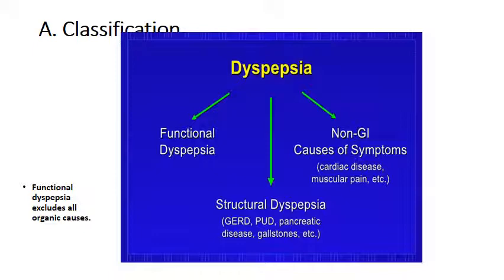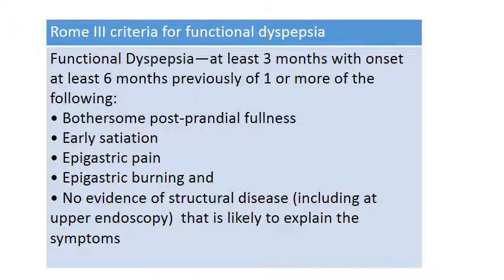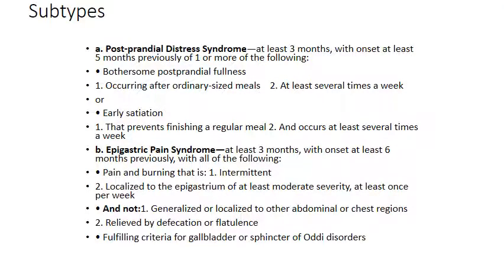We always diagnose functional dyspepsia by exclusion of organic causes. The Rome Foundation put forward criteria based on symptoms for the diagnosis of functional dyspepsia. This criteria depends on the presence of one or more of the following: post-prandial fullness, early satiation, epigastric pain, or epigastric burning with no evidence of structural disease. These symptoms should be present for at least three months, with onset at least six months previously. Functional dyspepsia has two main subtypes: post-prandial distress syndrome and epigastric pain syndrome.